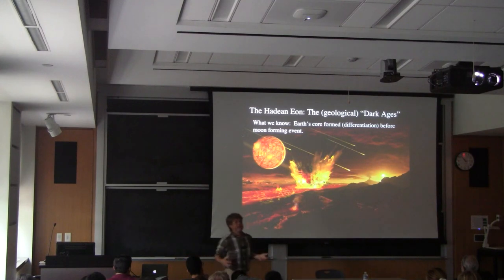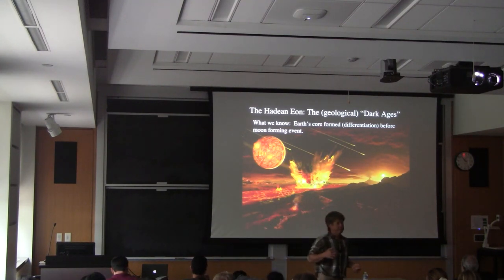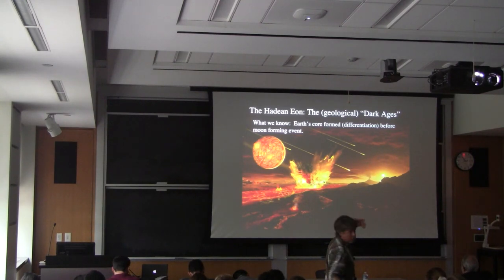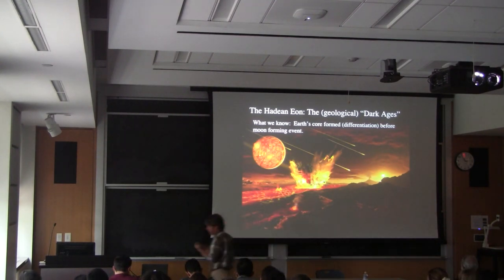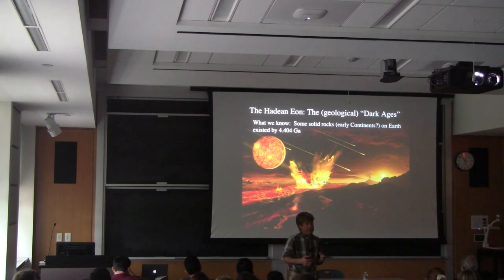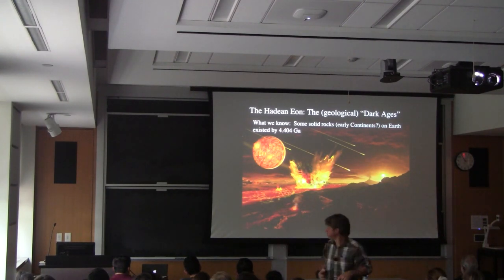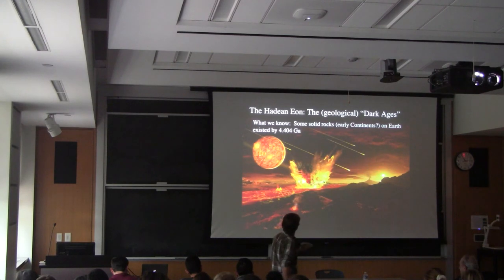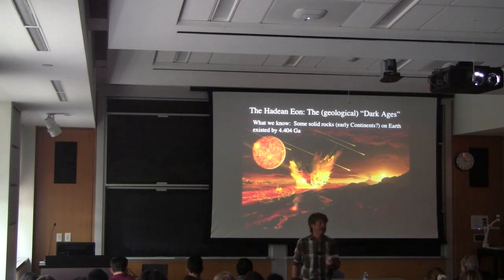Regarding Earth's core: if we accept the giant impact hypothesis for making the moon, then Earth's core has to have formed before the moon, because the moon doesn't have an iron-rich core — it's all rocky material. We also know that we've got some solid rocks, maybe related to continental crust material, dating back as early as 4.404 billion years ago.